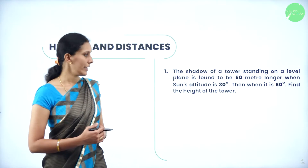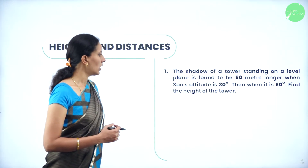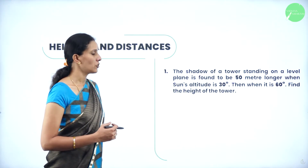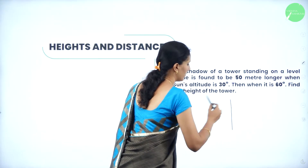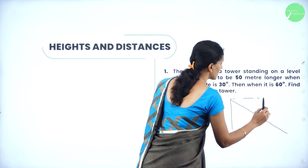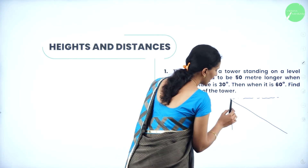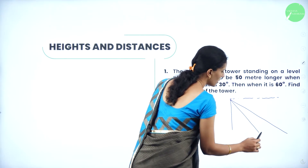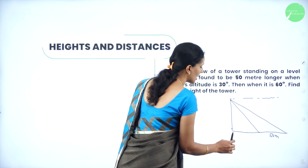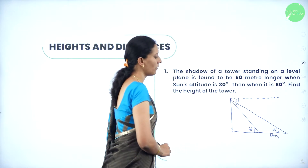The first question: the shadow of a tower standing on a level plane is found to be 50 meters longer when the sun's altitude is 30 degrees than when it is 60 degrees. Find the height of the tower. So here, let this be a tower. When the sun's altitude was 30 degrees, the shadow is longer, and when it is 60 degrees, the shadow is shorter. This is 30 degrees and this is 60 degrees for the sun's altitude.